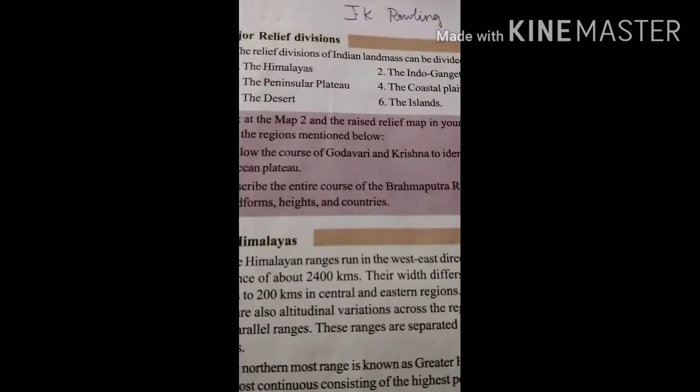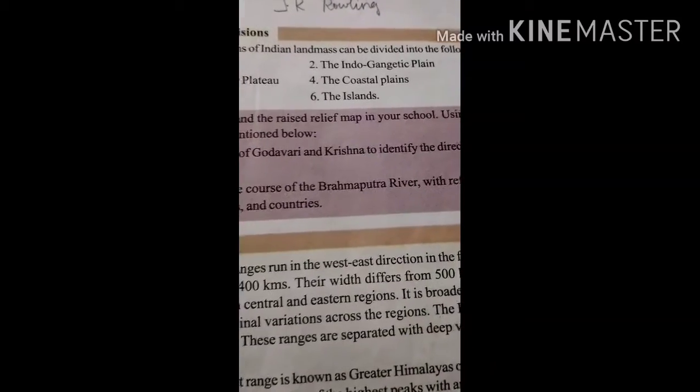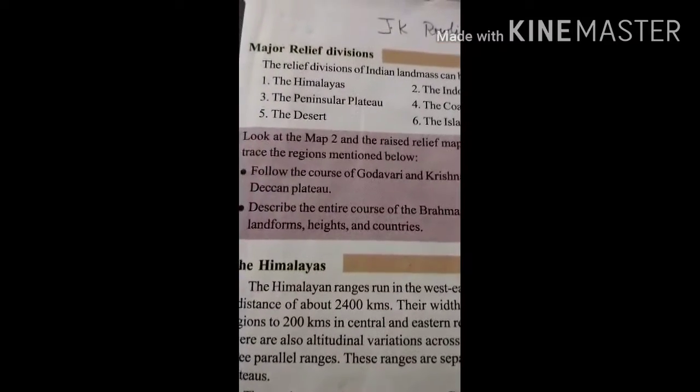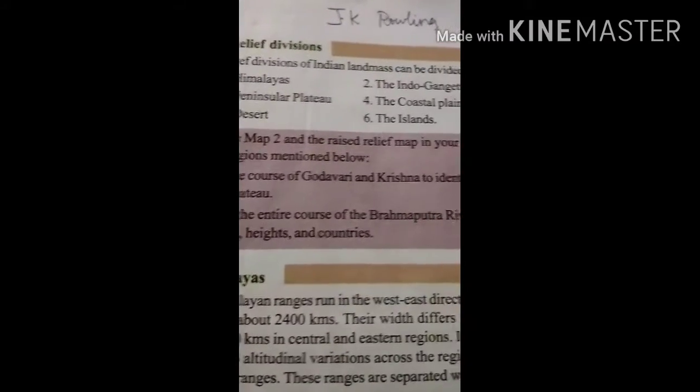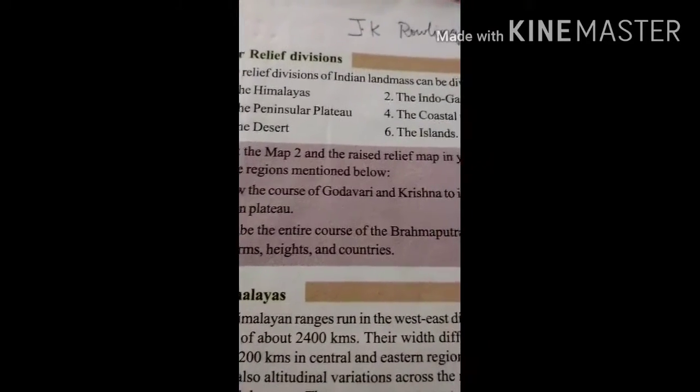The relief divisions of Indian landmarks can be divided into the following six groups: first one is the Himalayas, second one is the Indo-Gangetic Plains, third one is the Peninsular Plateau, fourth one is the Coastal Plains, fifth one is the Desert, and sixth one is the Islands.